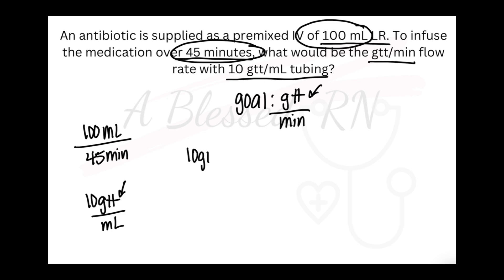If I'm looking for drops on the top, like my goal says, I'm going to start with the puzzle piece with drops and make sure my drops are on the top. We can only use one puzzle piece once — and so that's done. Now I've got mL on the bottom.